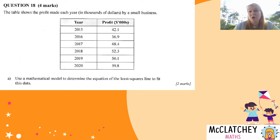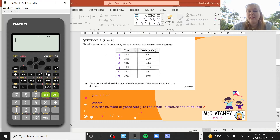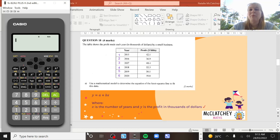We need to create a mathematical model to determine the equation of the least squares line to fit this data. It's important to note that in the marking scheme students were awarded a mark not just for finding the model on the calculator but for also stating what the variables are. Stating that x is the number of years and y is the profit in thousands of dollars was worth a mark. A model needs to have all the information — not just an equation, but also the variables. So if you're ever asked to create a mathematical model, make sure you state your variables.